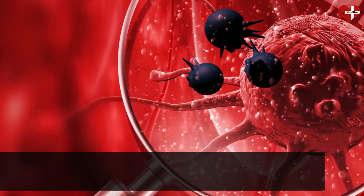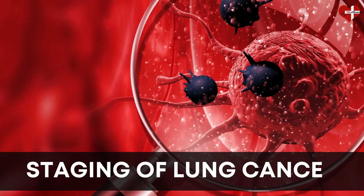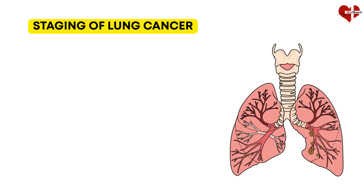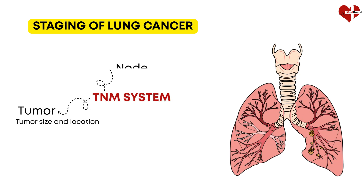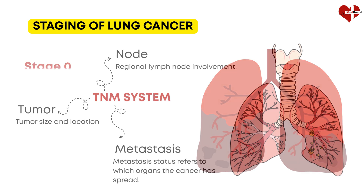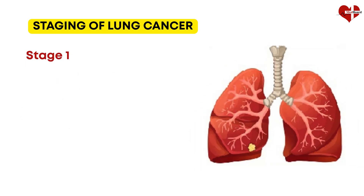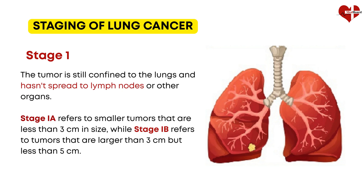Lung cancer can be classified into different stages based on the extent of the disease and the spread of cancer cells. The staging system commonly used is the TNM system, which stands for tumor, node, and metastasis. Stage 0, also known as carcinoma in situ, refers to cancer localized to the surface layer of the lungs, where cancer cells have not invaded deeper tissues or spread to lymph nodes or distant organs. In Stage 1, the tumor is still confined to the lungs. Stage IA refers to tumors less than 3 cm in size, while Stage IB refers to tumors larger than 3 cm but less than 5 cm.